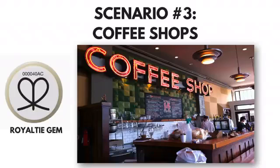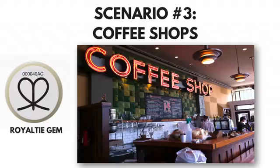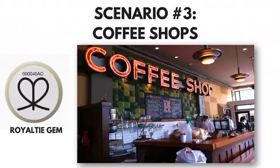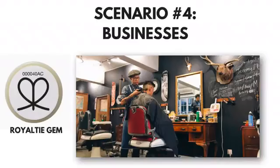Scenario three is a coffee shop. Think about how many people go to a coffee shop every year. You could work out something with a coffee shop owner — give them a gem for free in exchange for allowing you to leave yours there, targeting all of their customers. The gems are so inexpensive it costs you pennies on the dollar for what you get in return. Give them a free gem and then leave yours at the coffee shop.